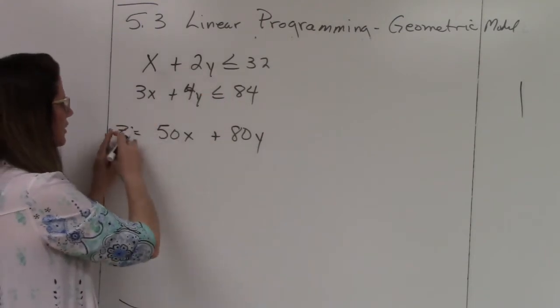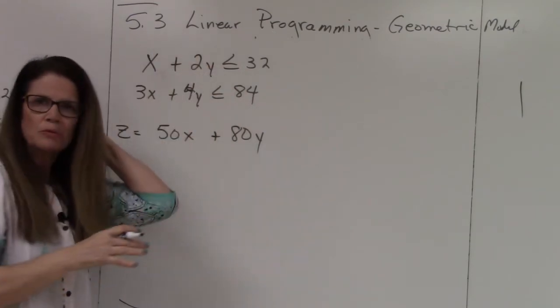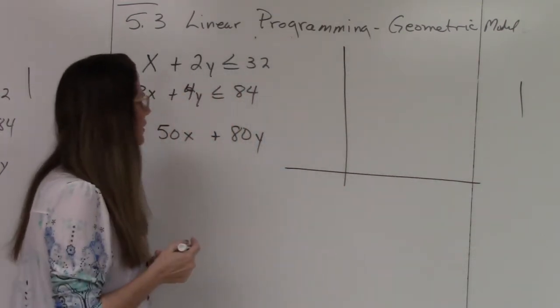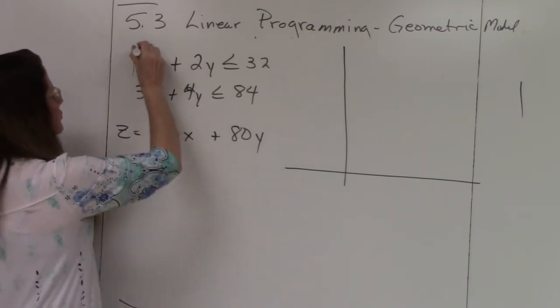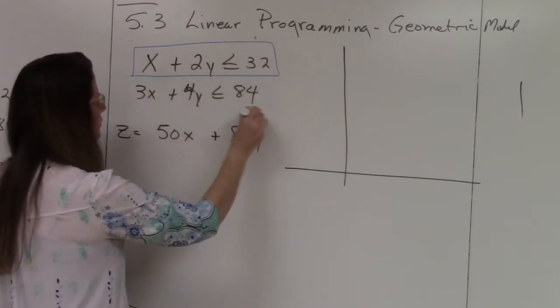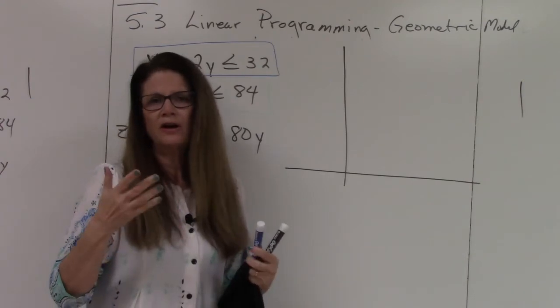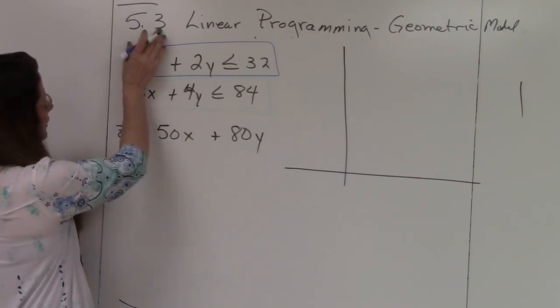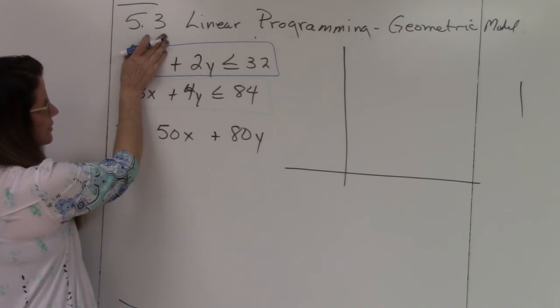So this is where your graphing comes in. Remember when we're talking about application, we're only working in the first quadrant, in the positive quadrant. The first thing we're going to do is identify the two lines. This first inequality is going to be my blue, and the second one is going to be the green.